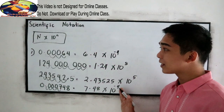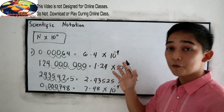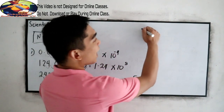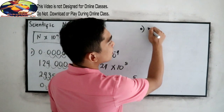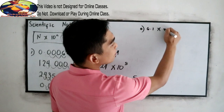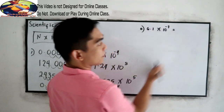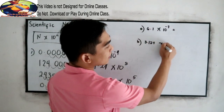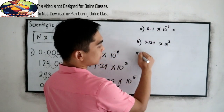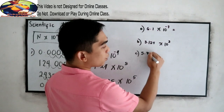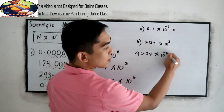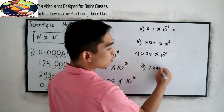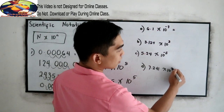Now, if the given is in scientific notation, we are going to convert it into decimal form. We have: A) 6.1 times 10 raised to negative 7, B) 3.124 times 10 raised to 3, C) 5.24 times 10 raised to negative 5, and D) 7.241 times 10 raised to 4.